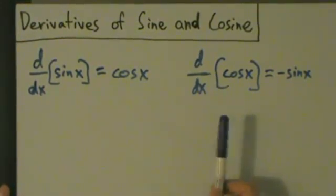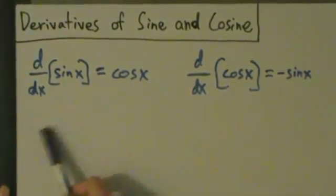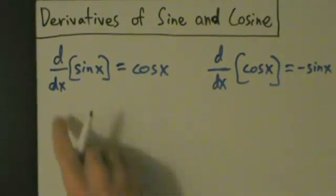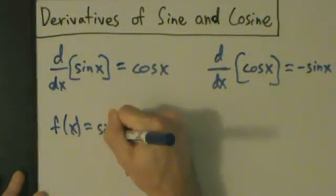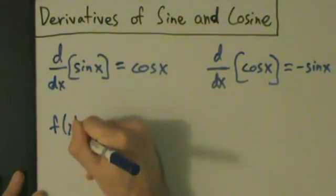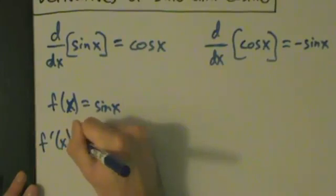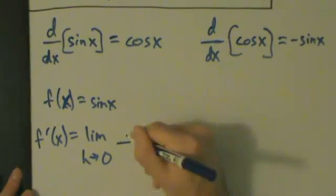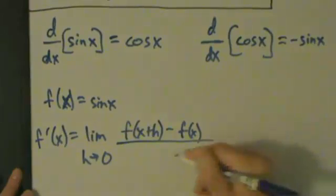So we're going to prove both of these here, and they're actually pretty similar proofs. We'll do the sine one first. Let f of x equal sine of x, and we'll show directly from the definition that the derivative is cosine of x. So f prime of x equals the limit as h goes to 0 of f of x plus h minus f of x, all divided by h.